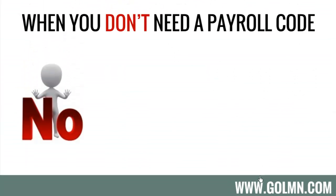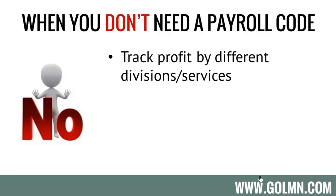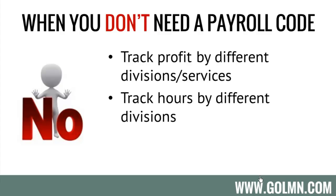Here's when you don't need to create a separate payroll code and would only be making things more complicated. If you want to track wage expenses by different division types or services — how much you spent in wages for maintenance versus construction versus unbillable — you could set up payroll items for that, but it's going to create a lot of complexity down the road. You're far better off using service items for that. If you just want to know the hours worked in different divisions, again, you can use a service item to pull exactly the hours worked in each division without creating separate payroll codes.